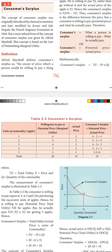For the fourth apple, satisfaction is lower, so the potential price is 3, actual price is 2, consumer surplus is 1. For the fifth apple, you are willing to pay only 2 — exactly the actual price of 2 — so consumer surplus is zero. When the potential price and the actual price are equal, consumer surplus is zero.